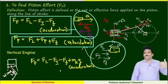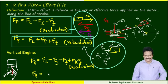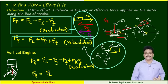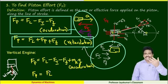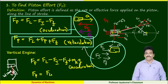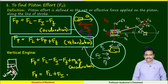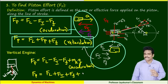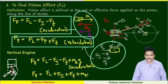What about retardation motion? During retardation, FL will be acting downwards. The piston will be moving upward, and hence inertia force acts in the opposite direction. Frictional force also opposes. Whether in retardation or acceleration, the weight will be acting downwards. This is the equation during retardation.